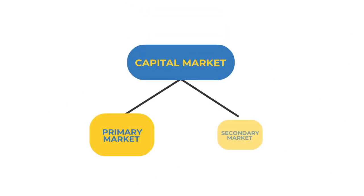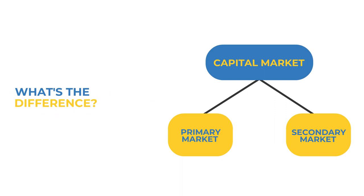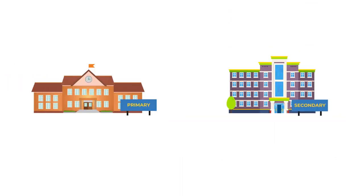Both primary and secondary markets are capital markets. Let's understand the difference with the help of an example. Just like a school has primary classes and then secondary classes, the stock market works similarly.